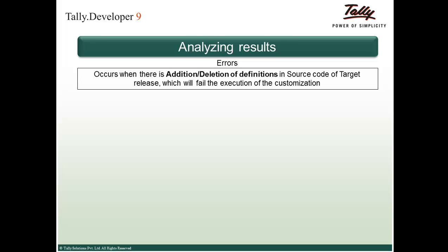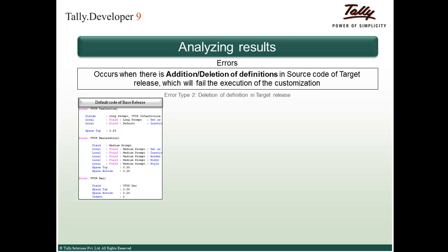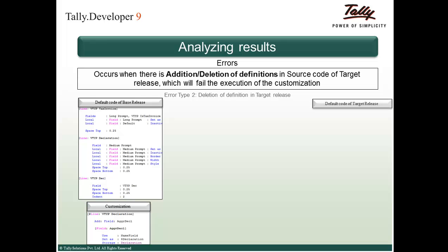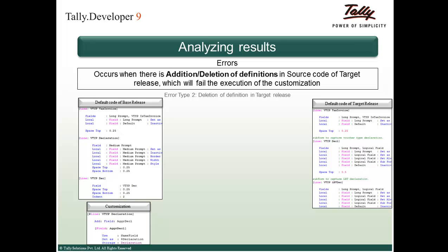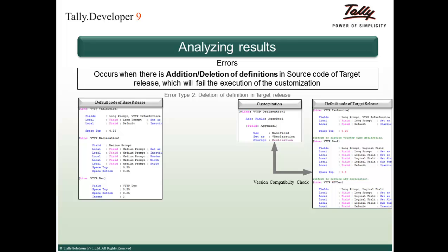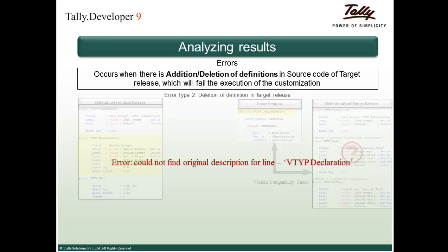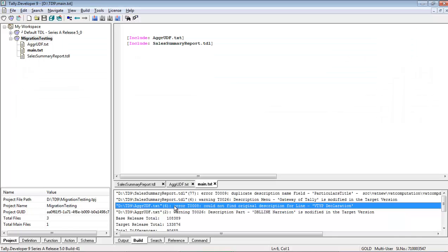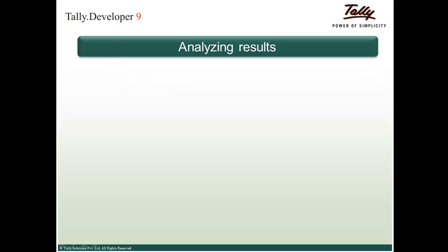Now consider the case where there has been a deletion of a definition from the target release. The base release has three line definitions: VTYP Tax Invoice, VTYP Declaration, and VTYP DEC. There is a customization where a new field has been added to the line VTYP Declaration, compatible up to release 4.8. In release 5.0, the line definition VTYP Declaration is missing. The version compatibility check shows the error 'Could not find original description for line VTYP Declaration', visible in the Build tab of Tally Developer 9.